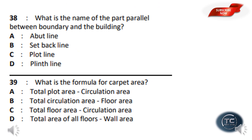What is the name of the part that is parallel between the boundary and the building boundary? The options are: abutland, setback land, plot land, plinth land. The answer is Option B — Setback land.